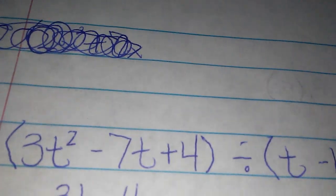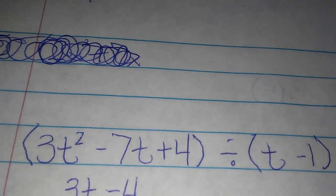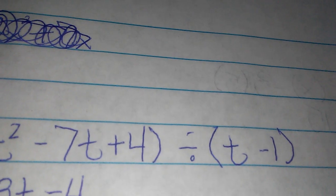So then for 1.9, I decided to do number 26, which was 3t squared minus 7t plus 4 divided by t minus 1.